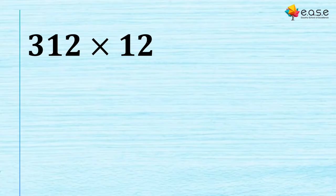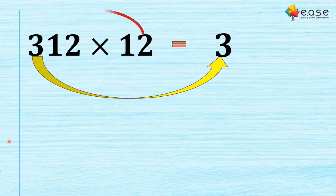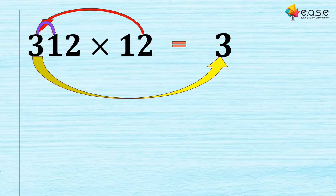Okay, so the first example we have is 312 multiplied by 12. The first thing you have to do is write the 3 as it is. Next, you multiply 3 by 2: 3 × 2 = 6, and 6 + 1 = 7. You continue this process consistently.